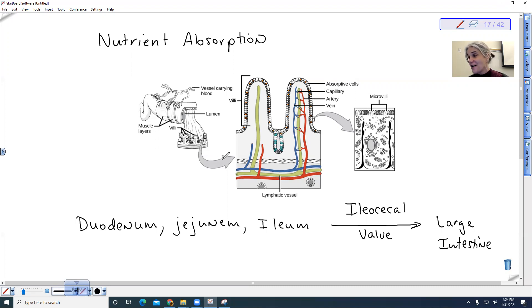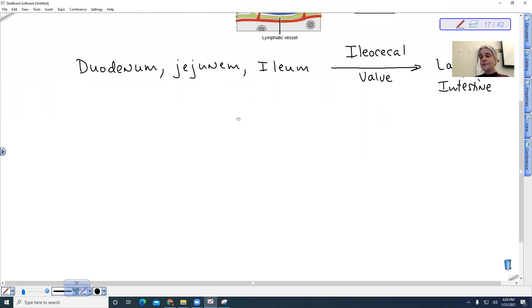So when we talk about nutrient absorption, we need to talk about the incredible surface area that we have in our small intestine. This is not the case for all organisms, but definitely for mammals, because remember, we are endotherms. We have to be super efficient. Our digestive system needs to be super efficient. So let's talk about the structure.